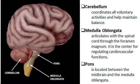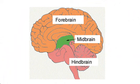The hindbrain is composed of the cerebellum and medulla oblongata. The cerebellum coordinates all voluntary activities and helps maintain balance. The medulla oblongata articulates with the spinal cord through the foramen magnum on one end and with the pons on the other. It is the center for regulating cardiovascular functions, breathing, digestion, reflexes, and coordination of movement. The pons is located between the midbrain and the medulla oblongata and links various parts of the brain, serving as the relay center between the medulla and the cerebrum. The midbrain consists of four masses of tissue between the forebrain and hindbrain — the upper two are involved in visual reflexes, the lower two are associated with hearing, and the midbrain is also responsible for postural reflexes and motor movements.